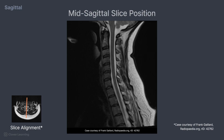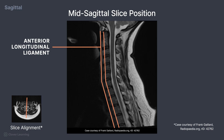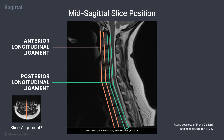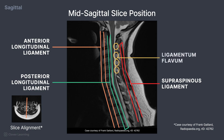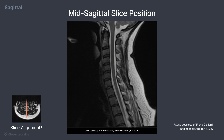There are many important structures at this midsagittal view. First, there are important ligaments which include the anterior longitudinal ligament, which runs down the anterior side of the vertebral bodies; the posterior longitudinal ligament, which runs down the posterior side of the vertebral bodies; and the supraspinous ligament, which runs down the tips of the spinous processes. The ligamentum flavum connects the lamina of each vertebra. For bony structures, we can see a portion of the clivus at the most superior portion of the image. Directly inferior is the dens, which is a part of C2.